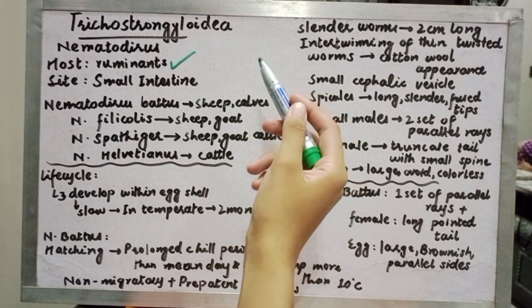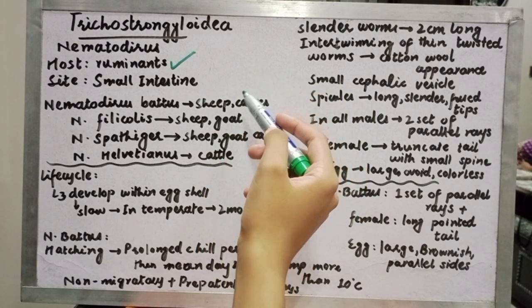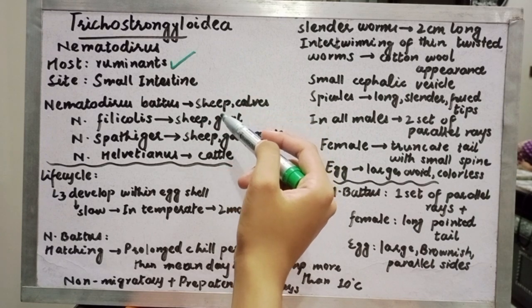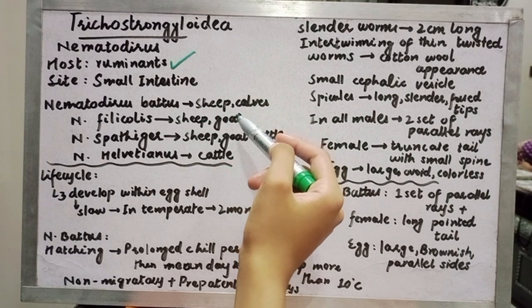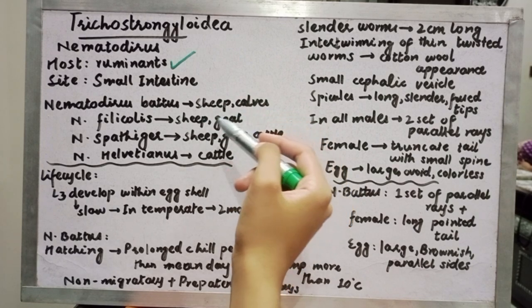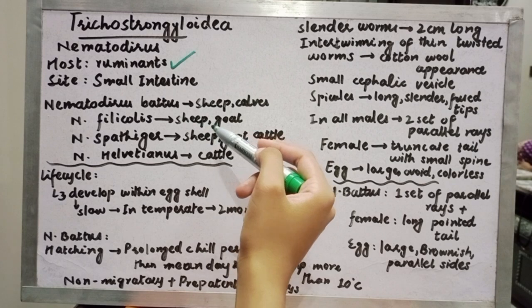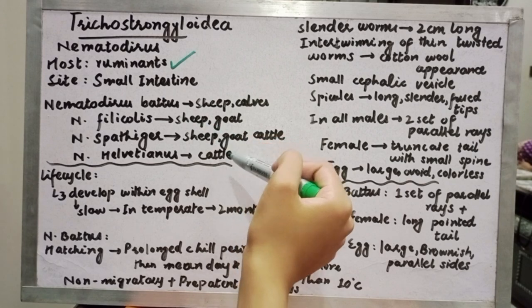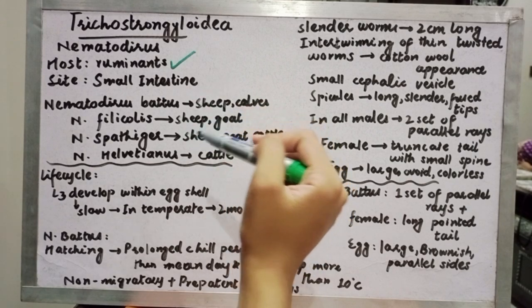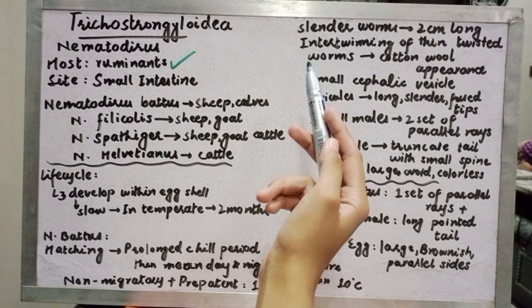Nematodirus battus affects sheep and cows. Nematodirus filicollis affects sheep and cattle. Nematodirus spathiger and Nematodirus helvetianus are also parasites of ruminants.